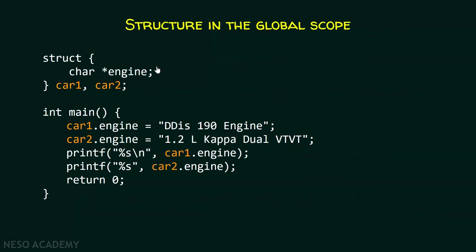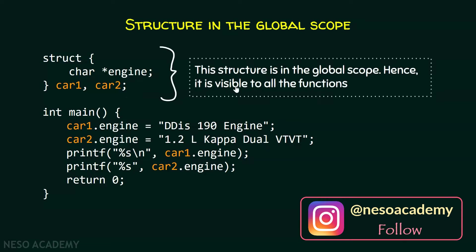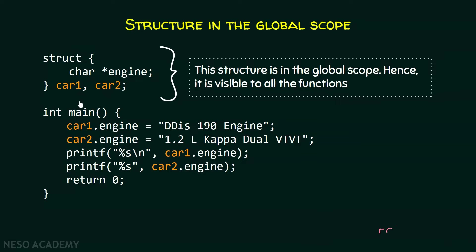Here we can see we have a structure and we have two variables car1 and car2. This structure is in the global scope, hence it is visible to all the functions. That is why the main function can access these variables, because these variables are declared in the global scope.